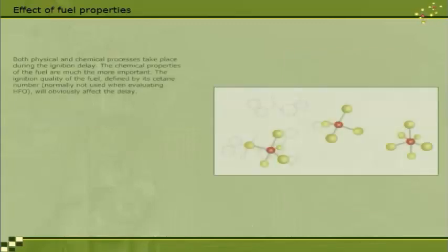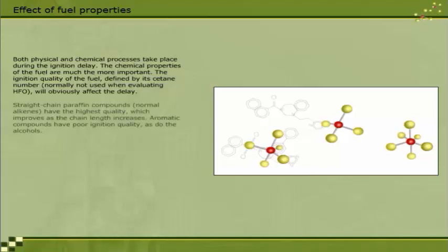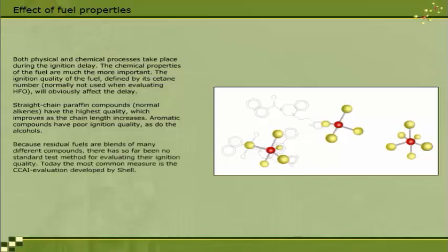Both physical and chemical processes take place during the ignition delay. The chemical properties of the fuel are much the more important. The ignition quality of the fuel, defined by its cetane number, normally not used when evaluating HFO, will obviously affect the delay. Straight-chain paraffine compounds, normal alkenes, have the highest quality, which improves as the chain length increases. Aromatic compounds have poor ignition quality, as do the alcohols.